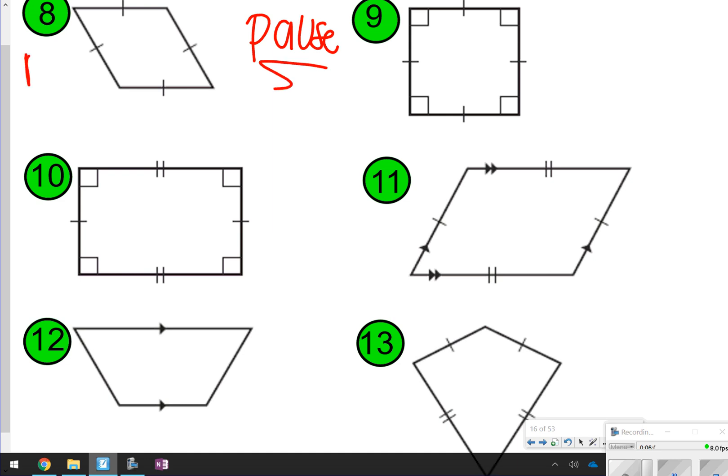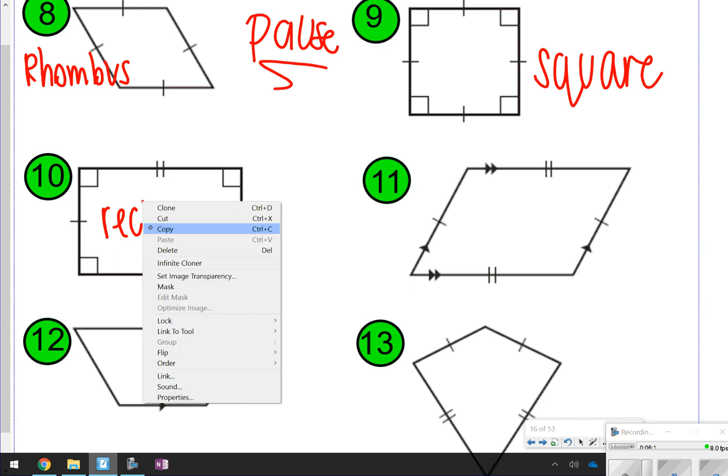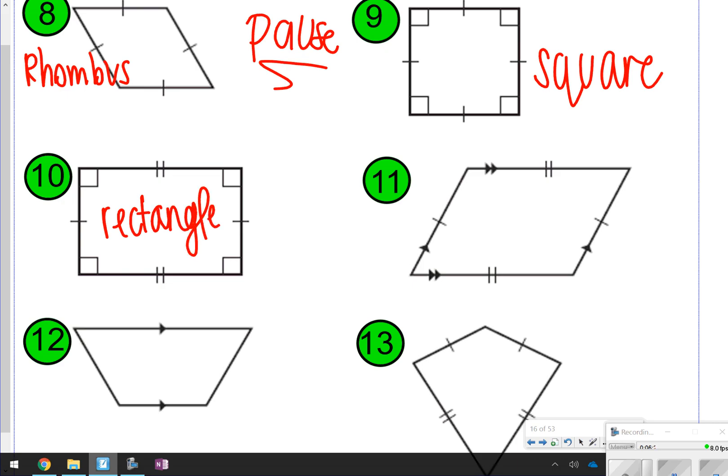All right, so number eight will be a rhombus. Number nine is a square. Ten is a rectangle. Eleven is a parallelogram. Twelve is a trapezoid. And thirteen is a kite.